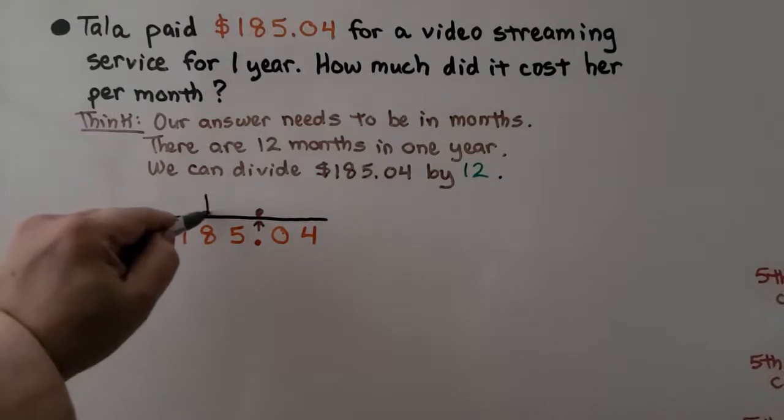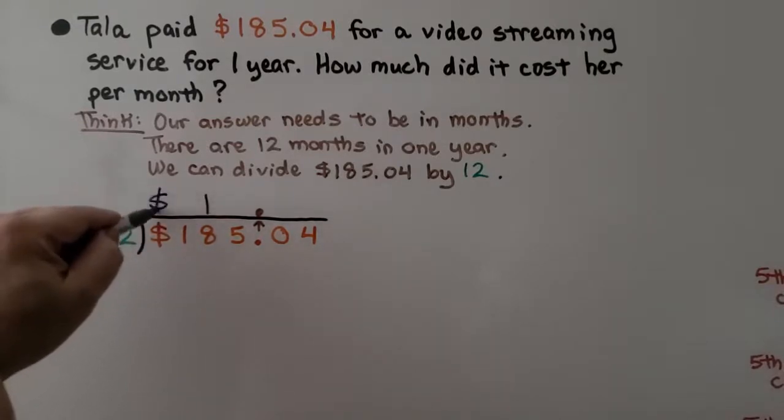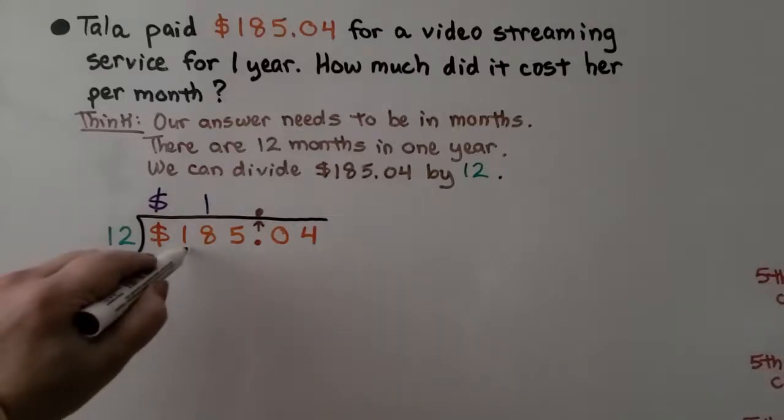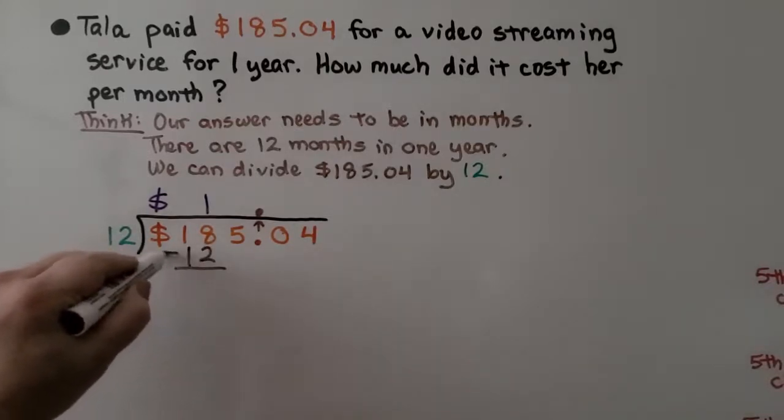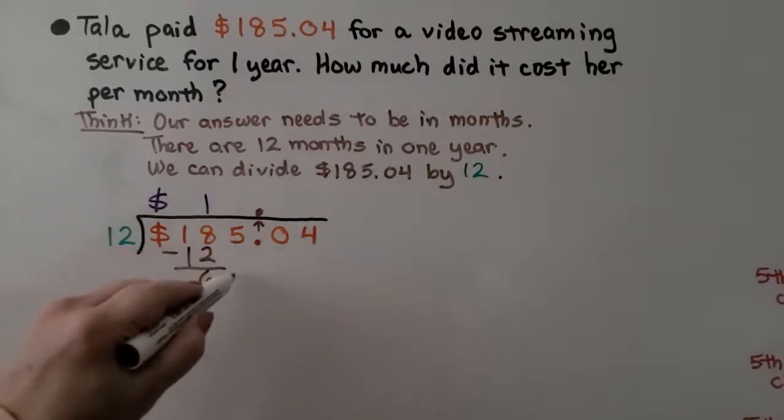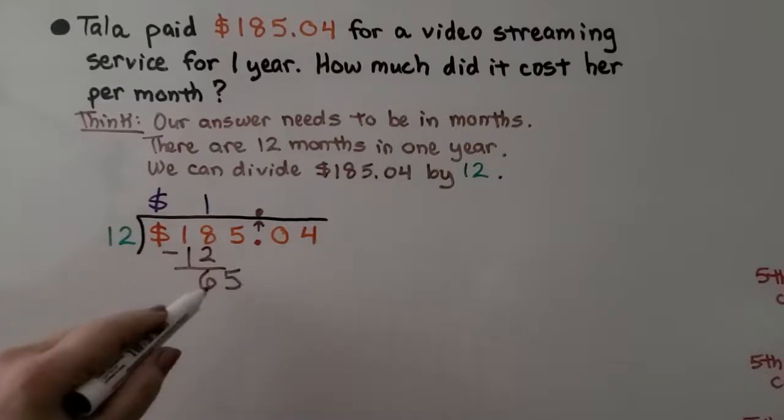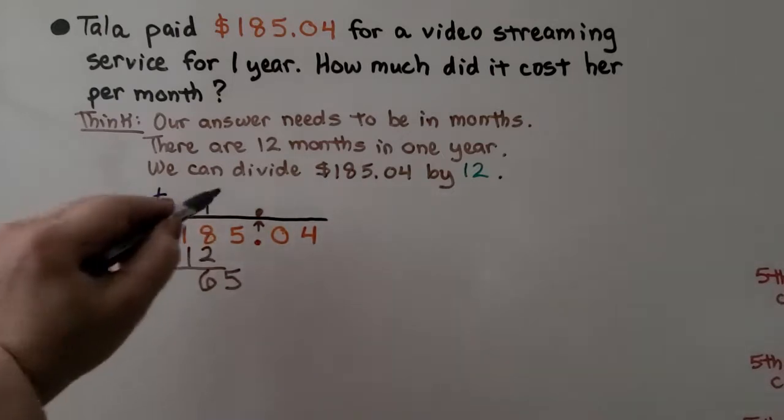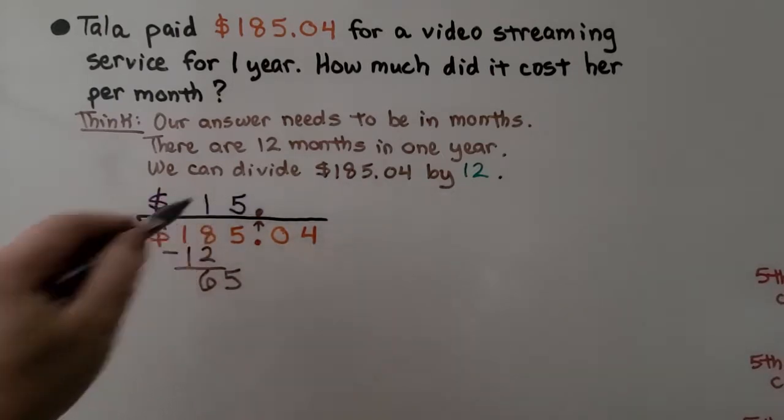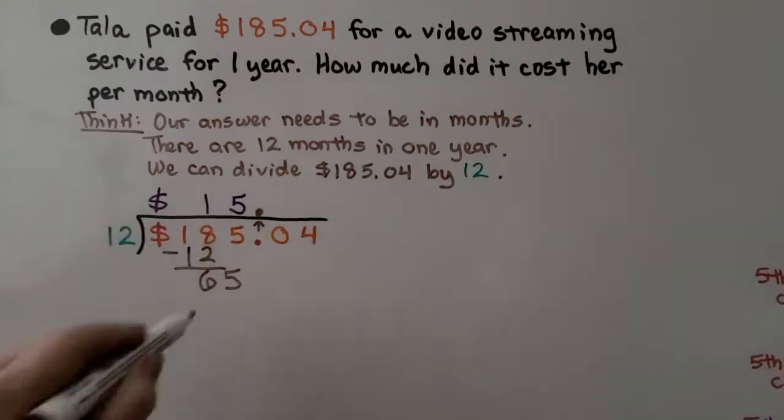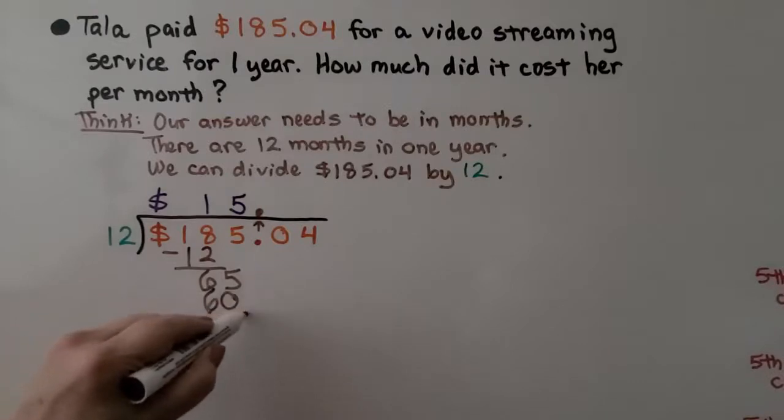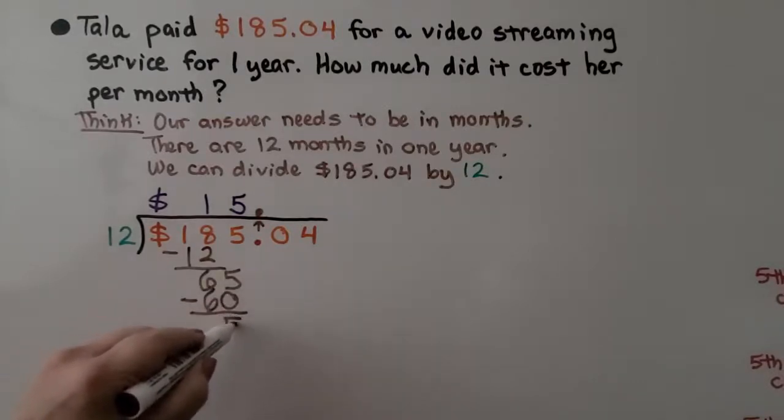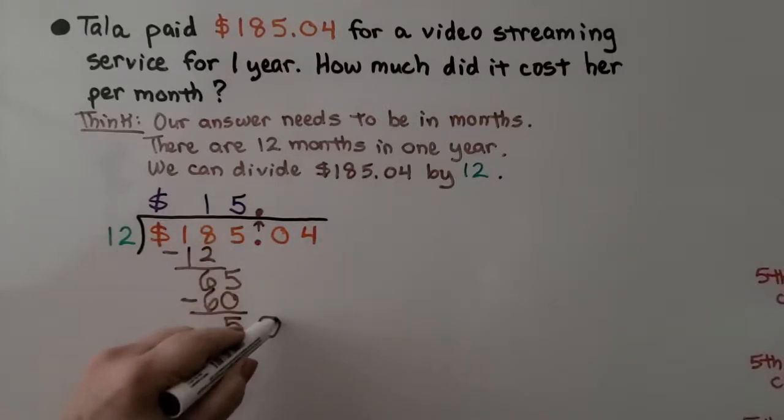I'm going to make sure we put our dollar sign. We do 12 times 1, which is 12. Subtract and get a 6. It's the 5's turn to come down. 12 times 5 is 60, so we can put a 5 here. We know 12 times 5 is 60, so we're going to subtract that. 65 minus 60 is 5. It's this 0's turn to come down.